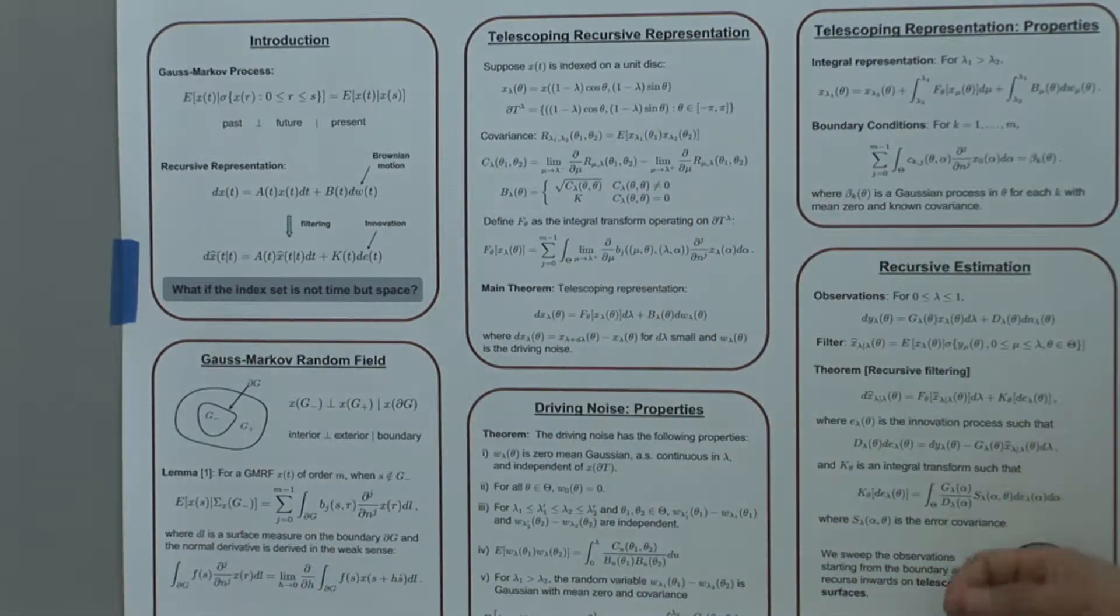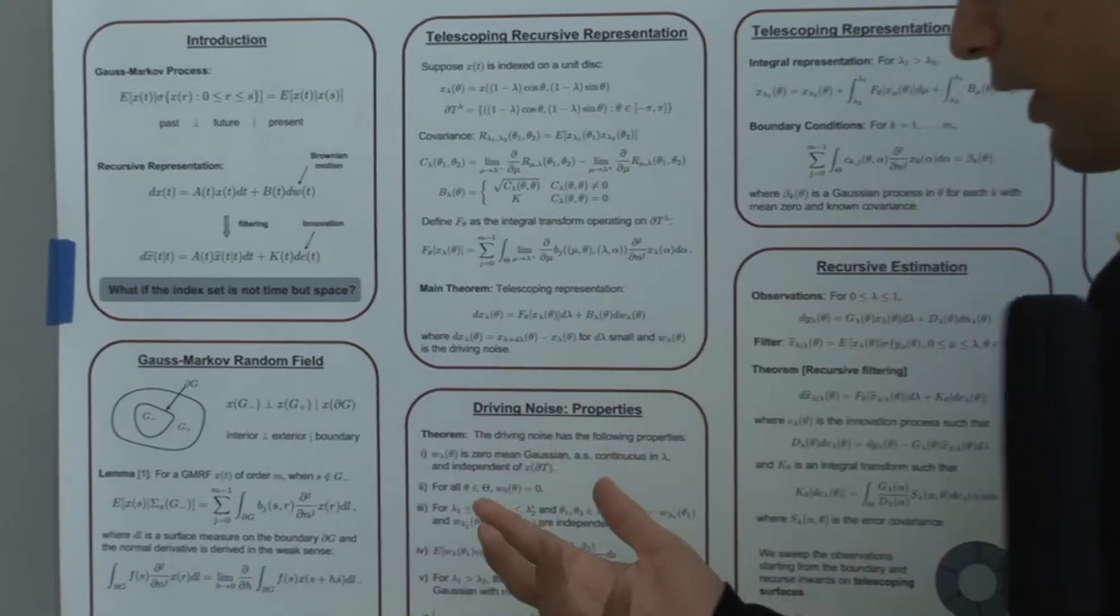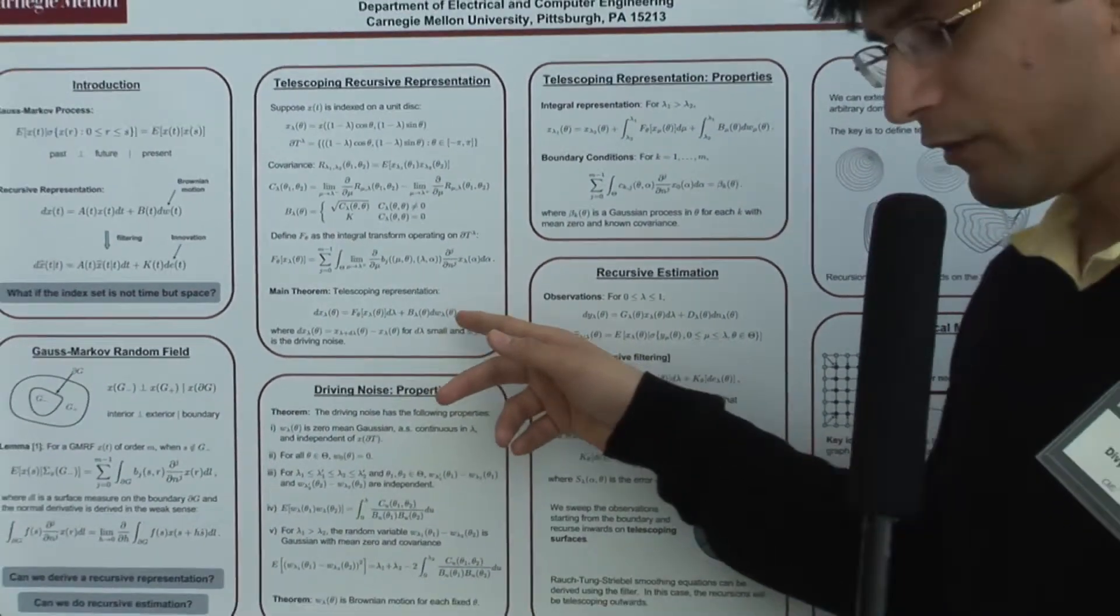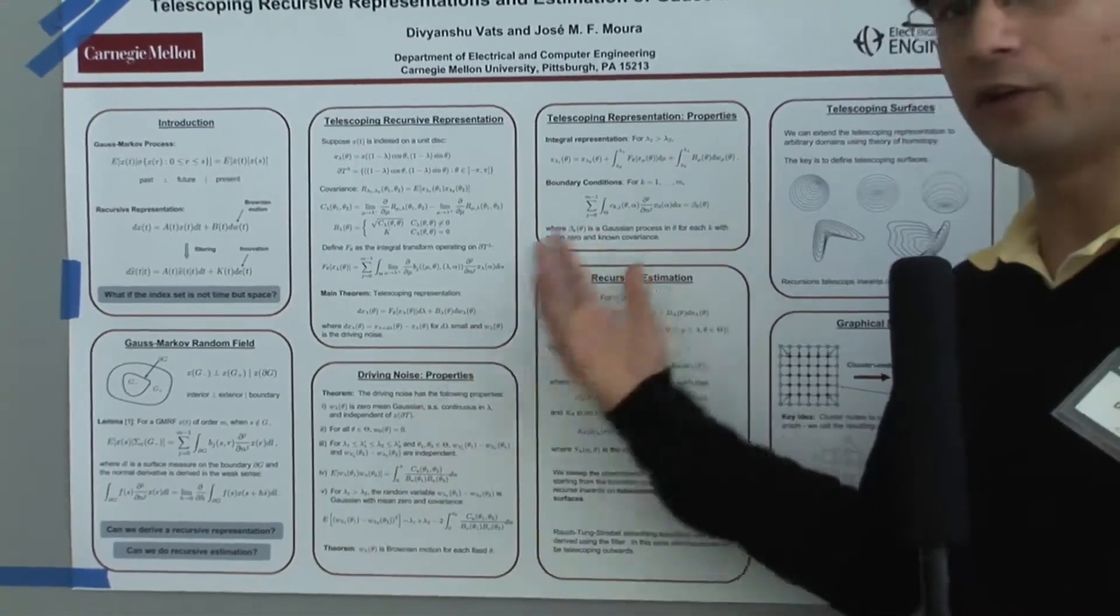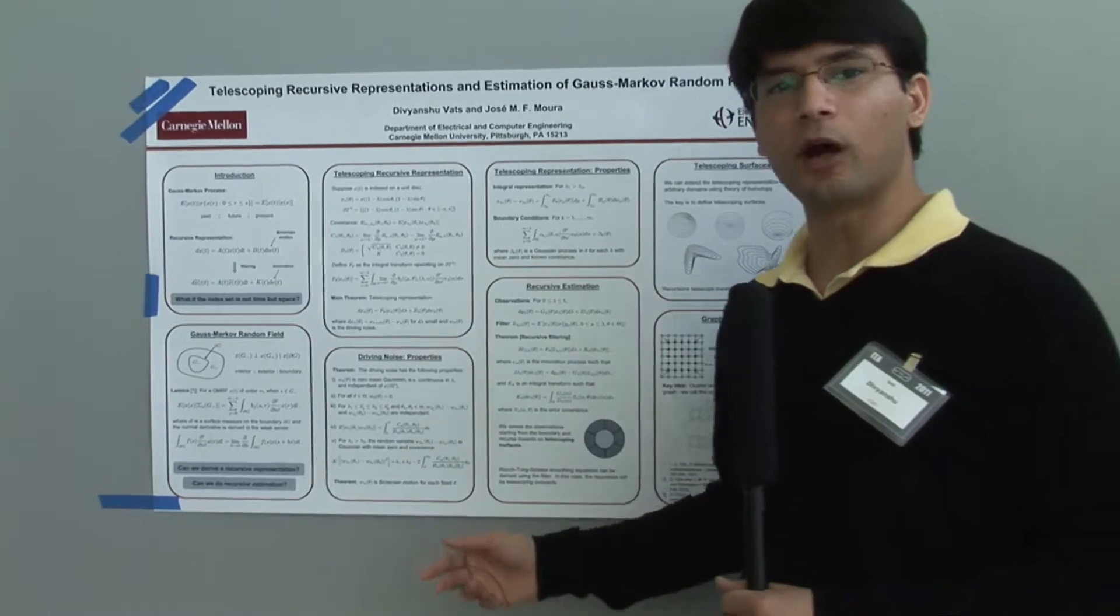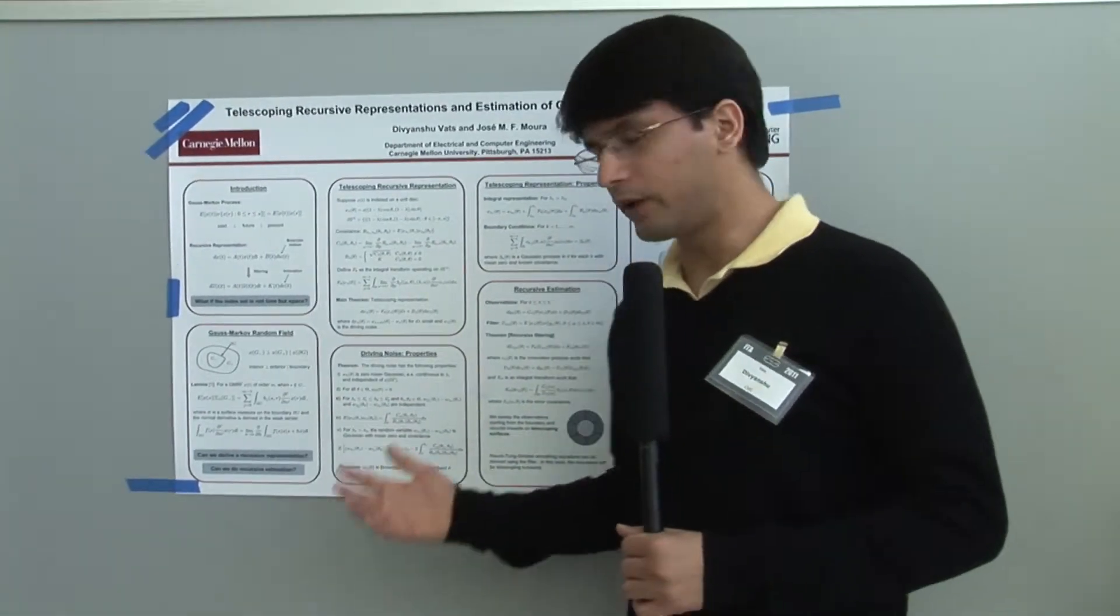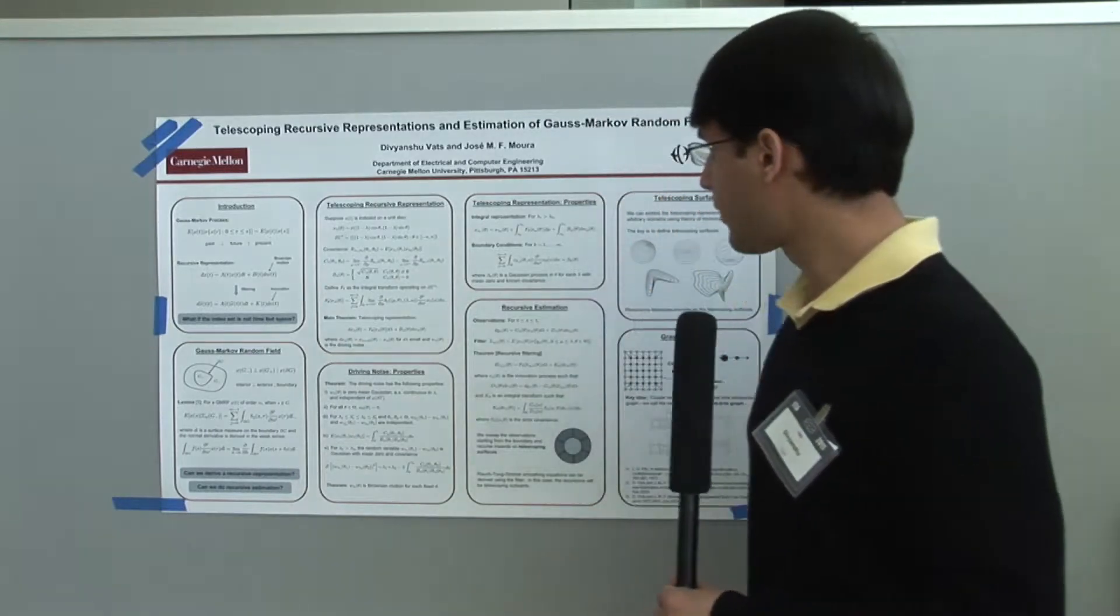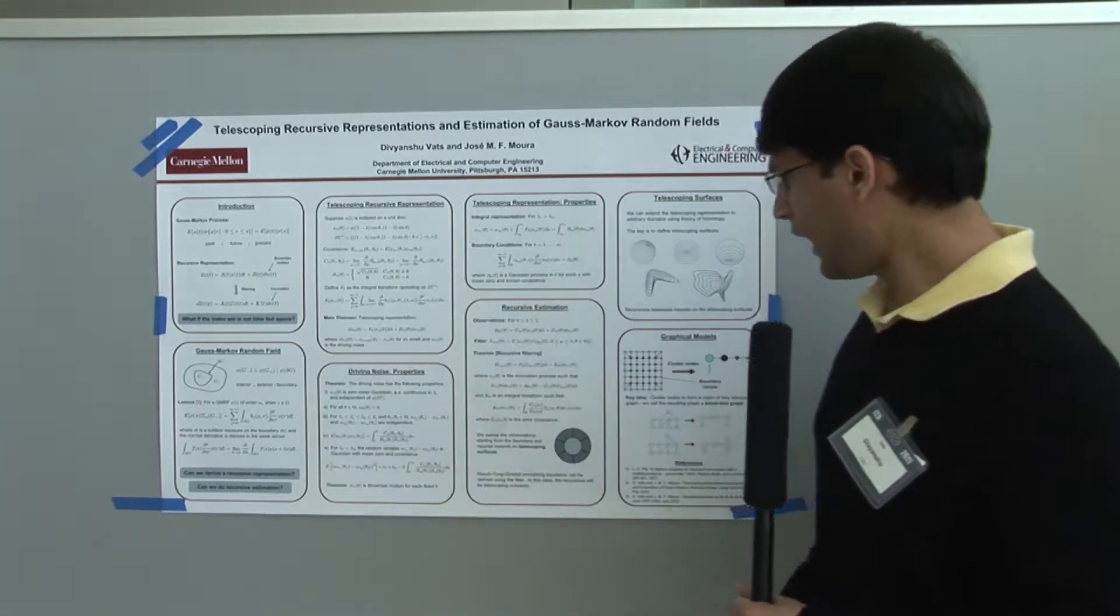the field and telescopes inward—that's how the recursions happen. A key result is that the driving noise is actually Brownian motion for fixed theta. We have defined several properties of what this driving noise looks like and the basic properties of the covariance. Given this